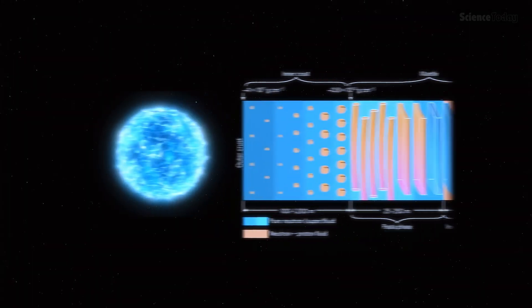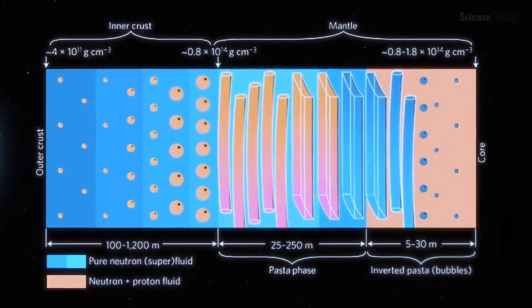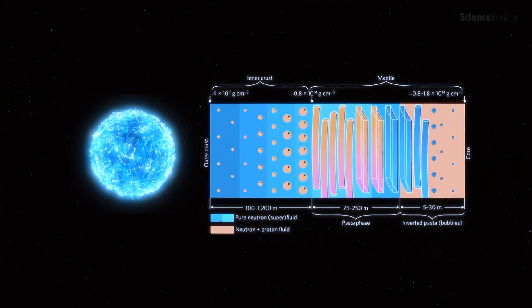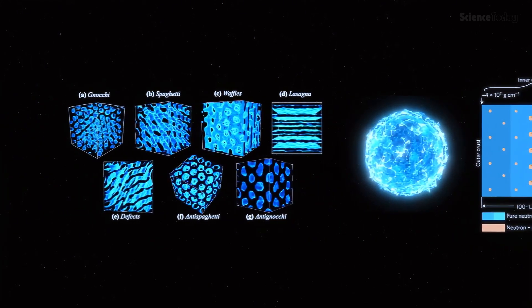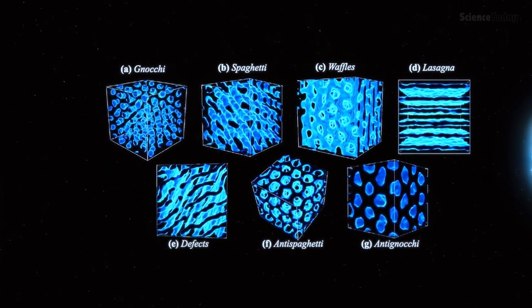Dive deeper, and the structure becomes even more surreal. Layers of matter form exotic shapes known as neutron spaghetti and neutron lasagna, bizarre arrangements of nuclear matter, held together by mind-bending physics.